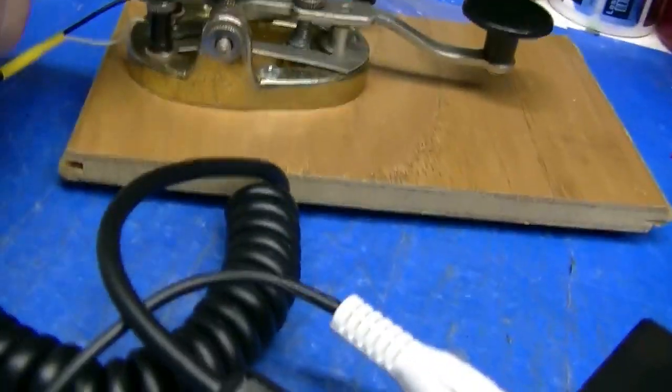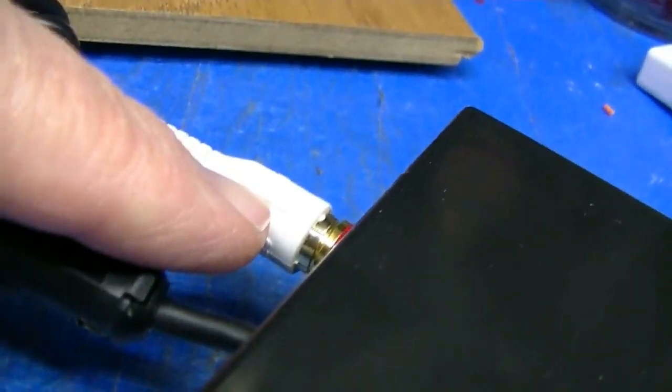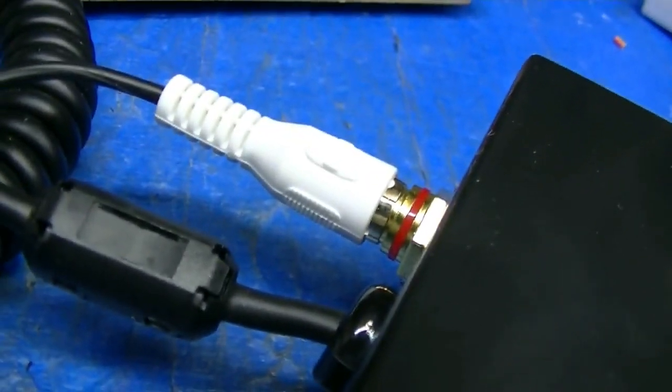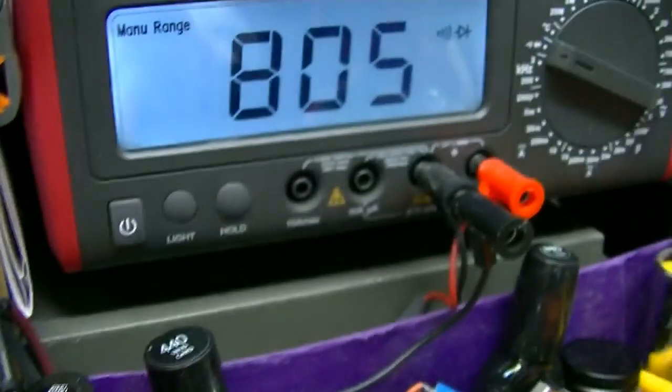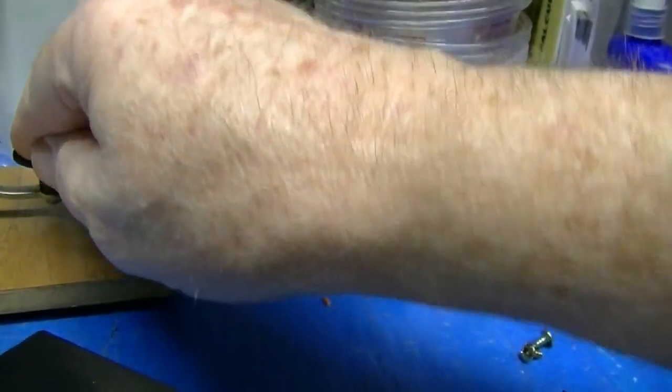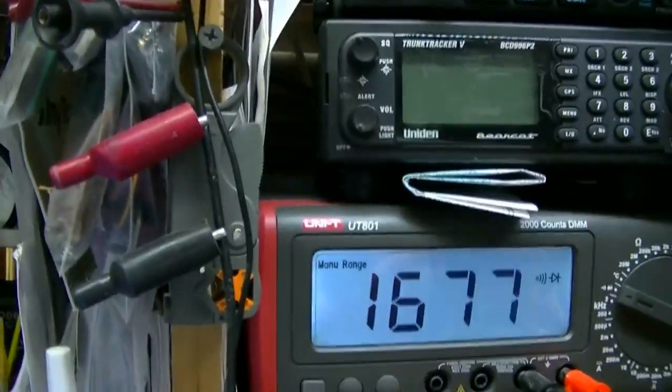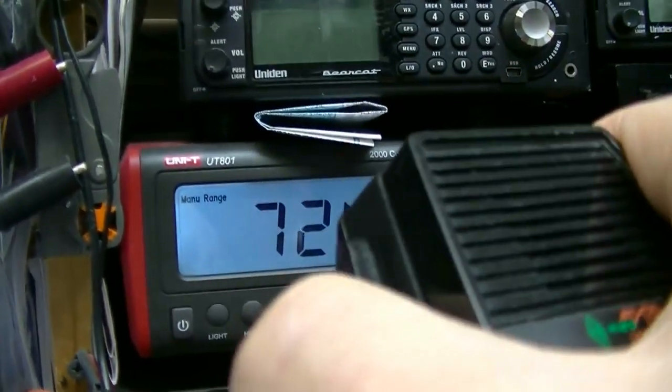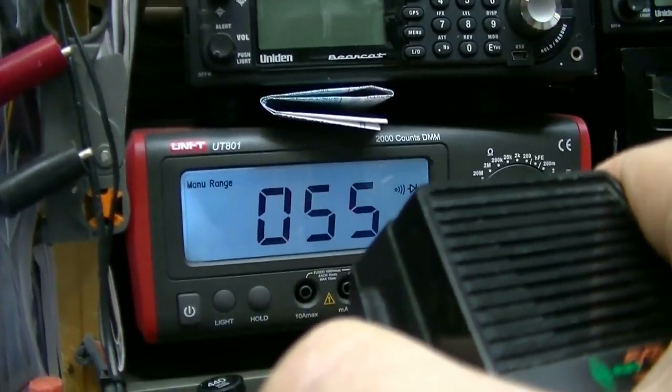The way I've got it set up now, you can key it with a keyer by plugging the keyer into that spot right there. I've got the meter hooked to it, and then the microphone will key it as well.